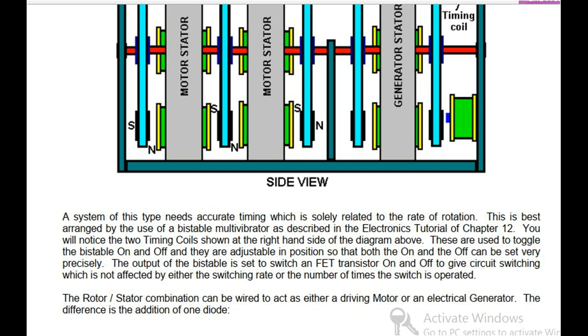You will notice the two timing coils shown at the right-hand side of the diagram above. These are used to toggle the bistable on and off and they are adjustable in position so that both the on and the off can be set very precisely. The output of the bistable is set to switch an FET transistor on and off to give circuit switching which is not affected by either the switching rate or the number of times the switch is operated.